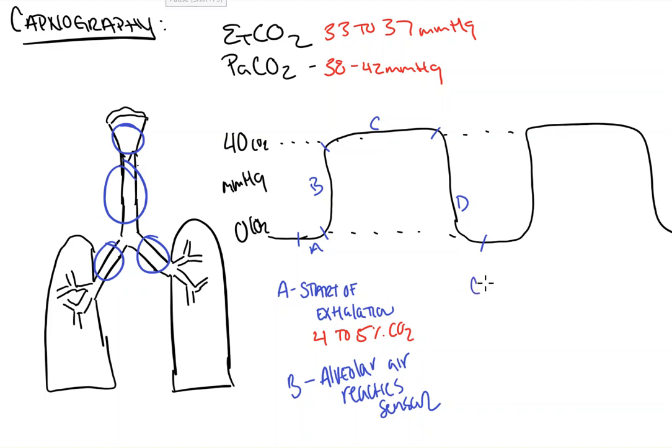Section C represents the alveolar plateau, and this is the point at which the last of the alveolar CO2 is being seen by the sensor. So, this is where it actually measures your end tidal CO2. Now, between sections B and C, there's this angle here called the alpha angle, and the alpha angle represents VQ matching.